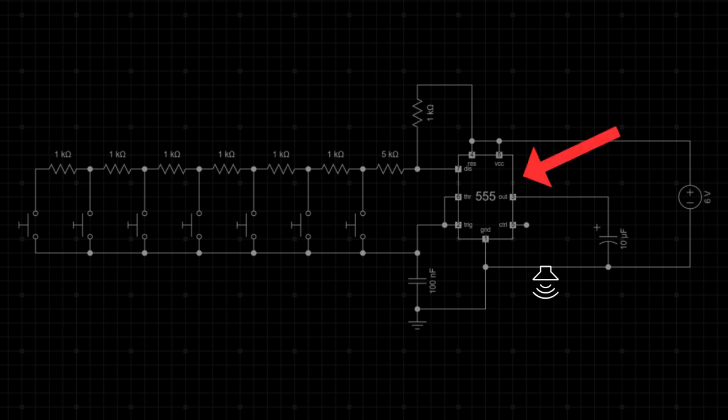When the 555 timer oscillates, it sends a varying square wave signal through the capacitor to the speaker. The speaker converts the square wave signal into sound waves, producing different tones based on the switch pressed.